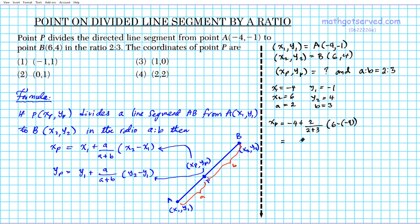So I'll just have to simplify this. Using order of operations, please excuse my dear Aunt Sally. So -4 plus, and then we have 2 over 5. If you simplify this parenthesis, 6 plus 4 is 10. Simplify further, -4, 5 goes into 10 twice, 2 times 2 is 4. So that will be plus 4. -4 plus 4 will give us the X coordinate of point P, which is 0.